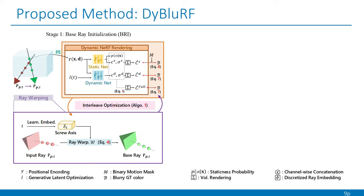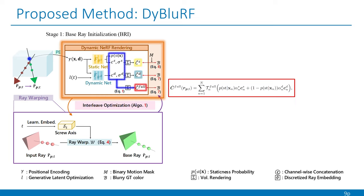In detail, the BRI stage consists of two components: dynamic NeRF rendering and ray warping. For the dynamic NeRF rendering, we decompose our radiance representation into static net and dynamic net and separately estimate the rendered colors of the static scene component and the dynamic scene component via continuous volume rendering. Furthermore, our DyBluRF combines the outputs of static net and dynamic net via the staticness probability to get the full rendered color.